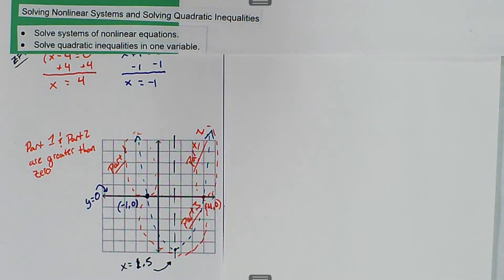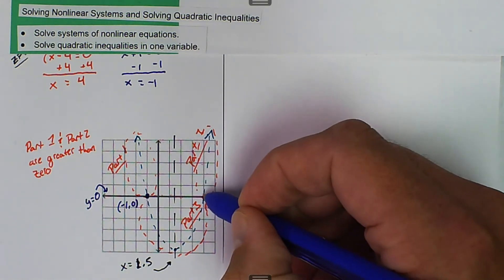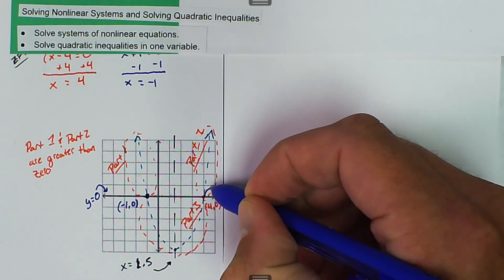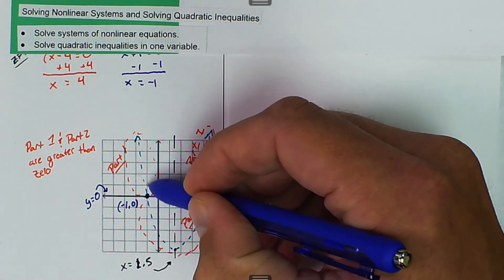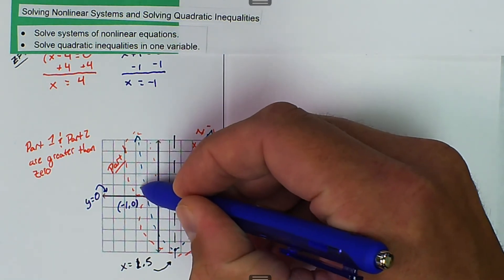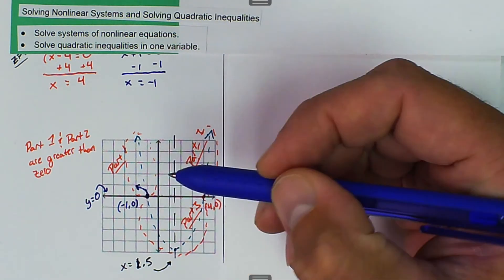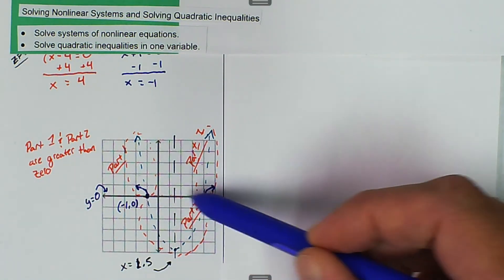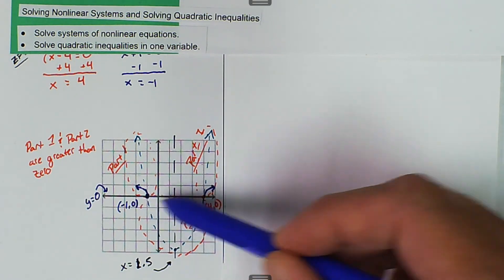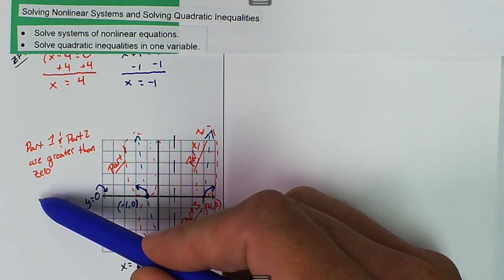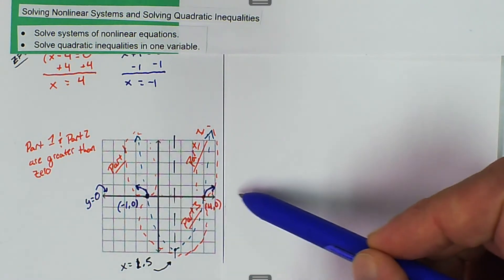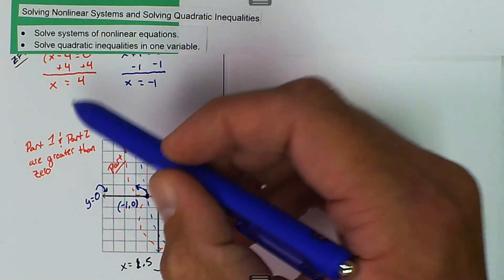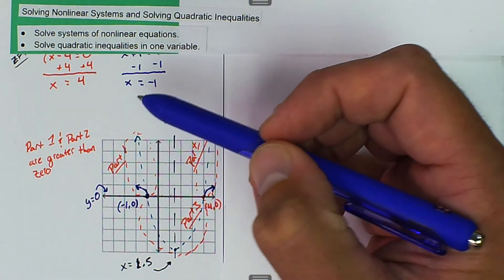And we're just interested in the x values. So as we go, as we increase this way, our x values continue to go in this direction. And as we increase this way, as we go up, our x values go in this direction to the left. So the parts that we're not counting, we're not counting the spots between those two points. Only the spots that are before and the spots that are after.